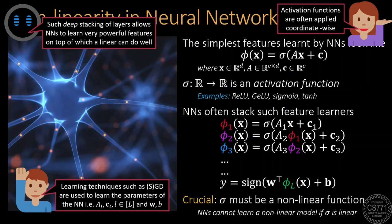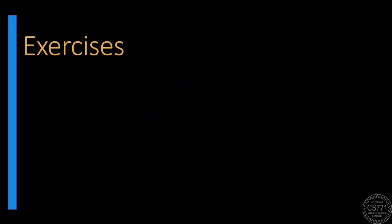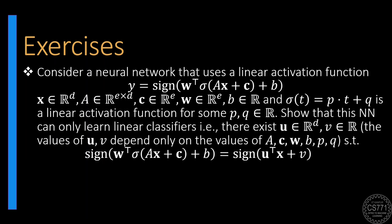However, it is notable that for a neural network to learn a non-linear function, its activation functions must be non-linear as well. If that is not the case, then a neural network cannot learn non-linear functions. Consider a neural network that uses an affine activation function — show that this neural network can only learn linear models. Next, explore what sort of functions a neural network can learn that uses the quadratic activation function.